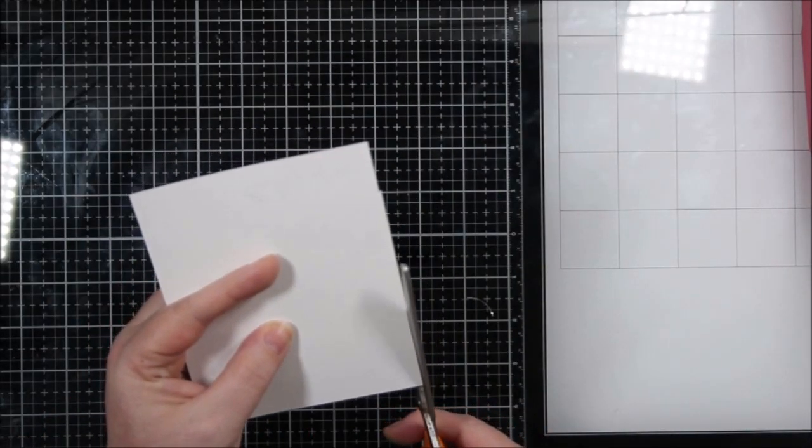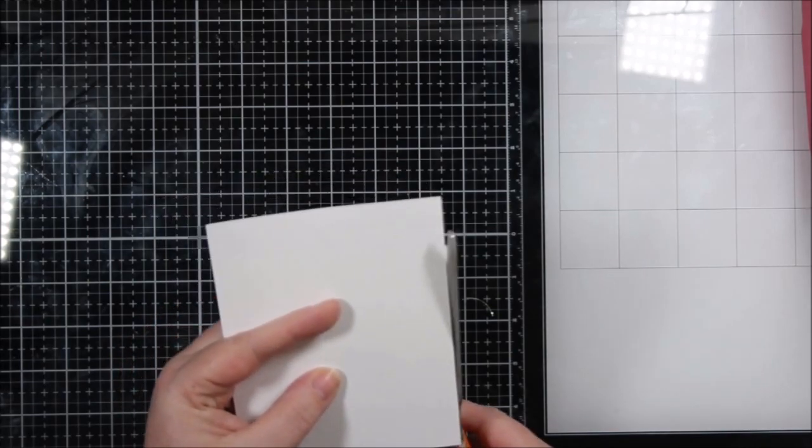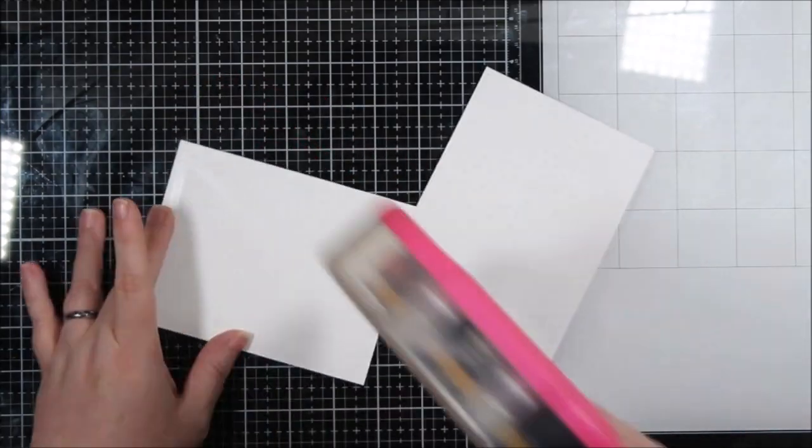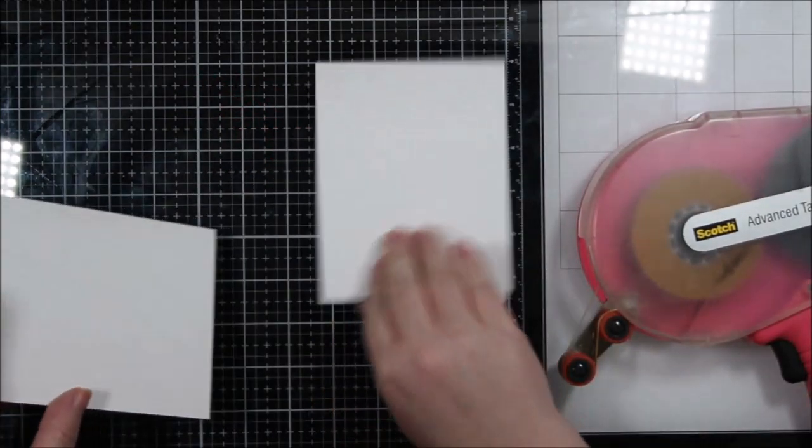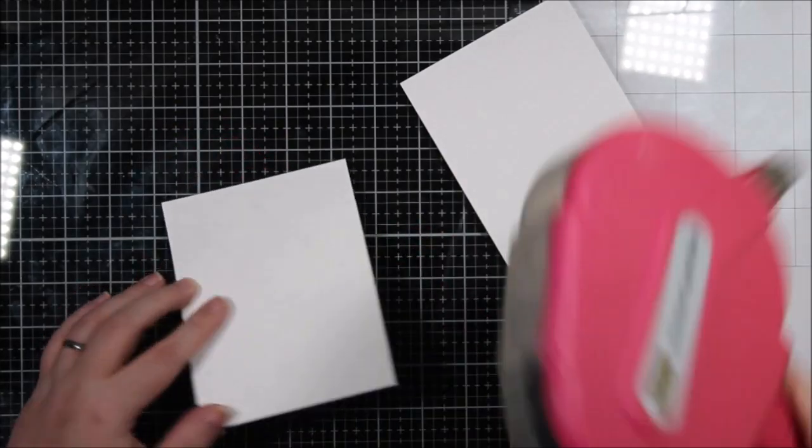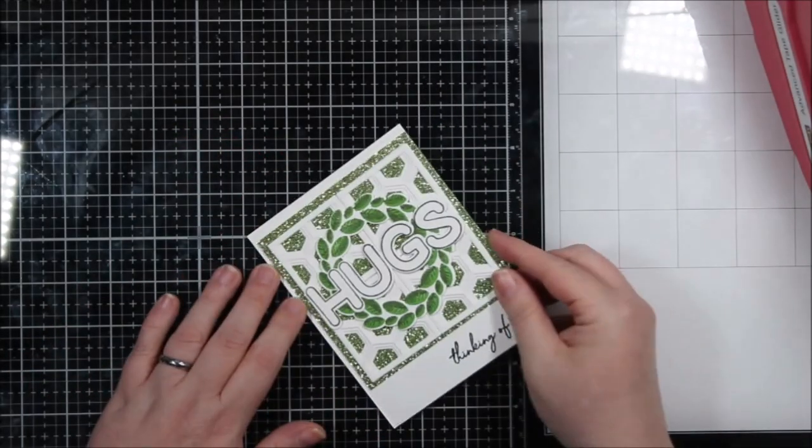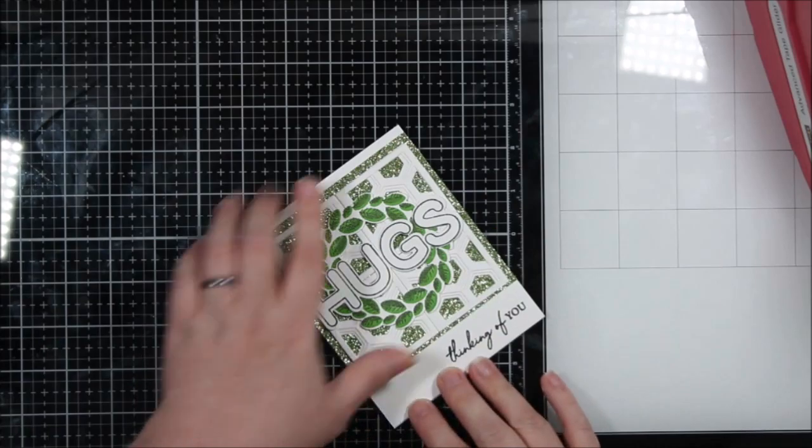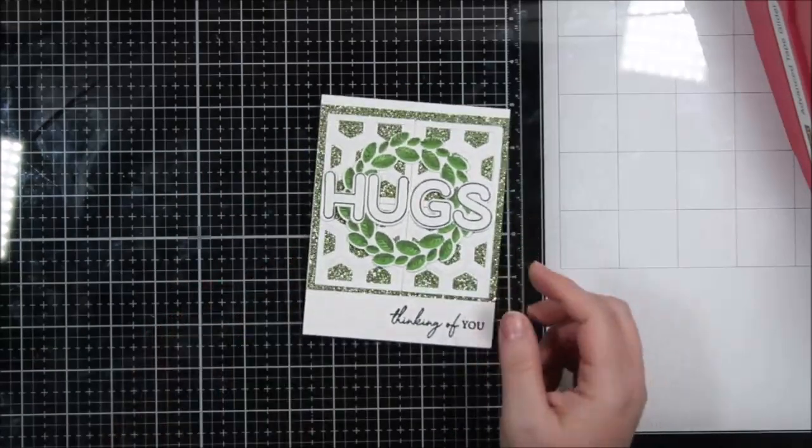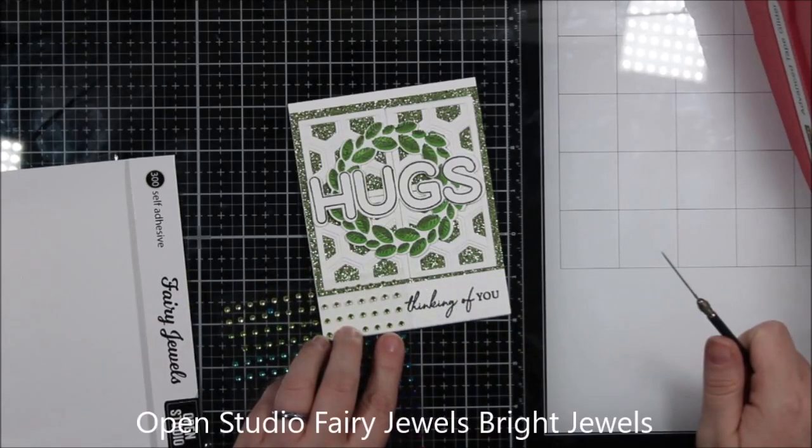After I stamped that, then I went ahead and adhered my panel here and then just trimmed off the part that was overhanging. When I had trimmed up that green piece of glitter cardstock, I just kind of roughly made it the right size so that I could get my squares on there. Then I'm going to go ahead and adhere this piece of white cardstock to a card base. I love that there is this larger border at the bottom and a smaller border at the top. I think it looks so pretty.